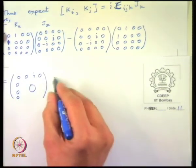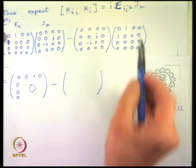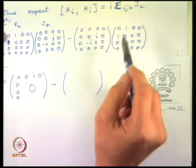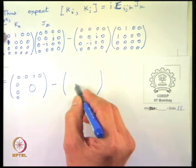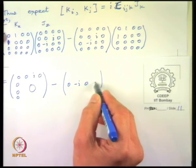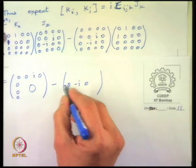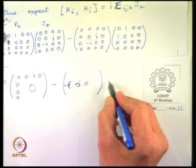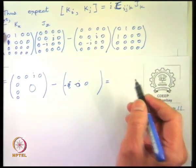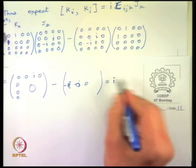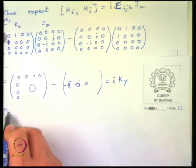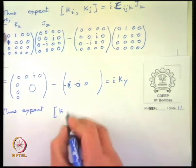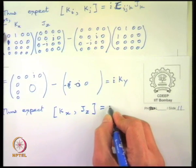All the other things are going to be 0, and minus the third row into second column, which is going to be equal to minus i — so minus i is over here. So what do we get? We get i times kx — isn't it? k_y. So thus we expect — let us write kx J_z was equal to i times k_y.